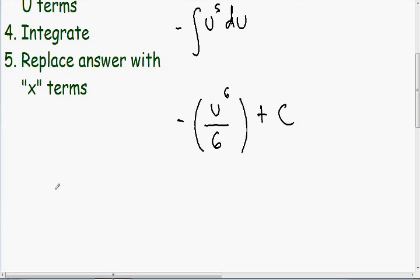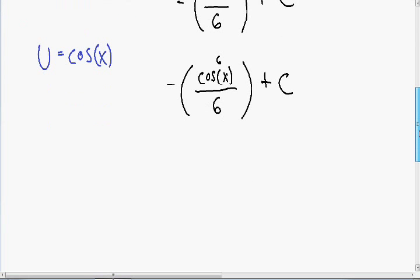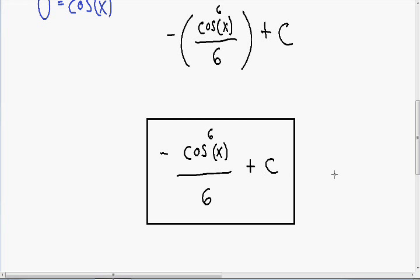Now we need to move on to our last step. We need to write our answer in terms of x. And just in case you forgot from before, our u was equal to the cosine of x. So instead of writing u to the sixth power, I'm going to put the cosine of x to the sixth power. And I can't forget about our 6 in the denominator. And I can't forget our plus c. So now I'm going to simplify this a little further and get rid of the parentheses. So our final answer is going to be negative cosine of x to the sixth power, all divided by 6, plus c. And this is our final answer.